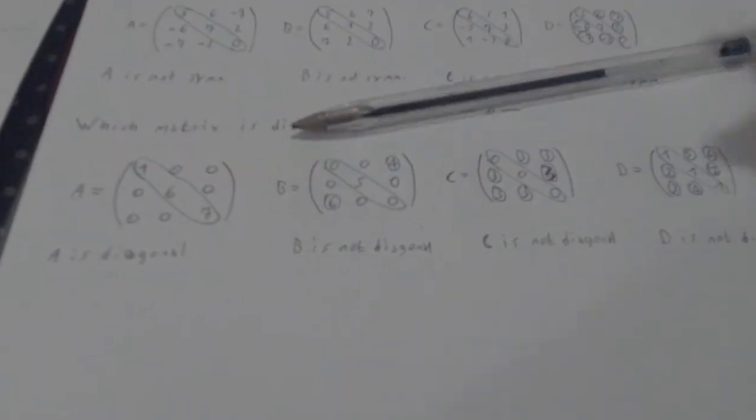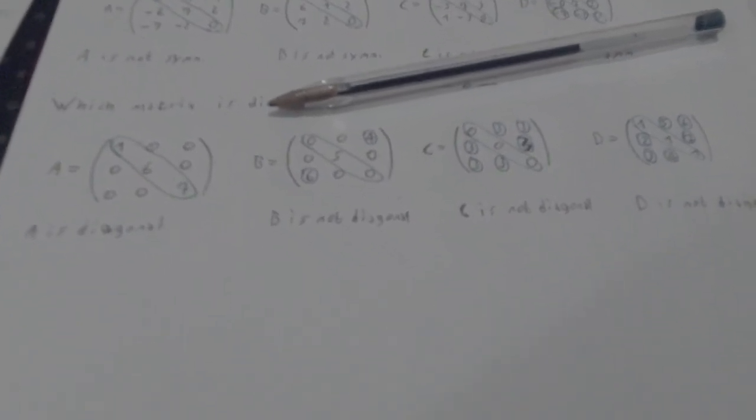So yeah, this is what we wanted. And therefore, A is diagonal. So this is how you recognize a diagonal matrix.